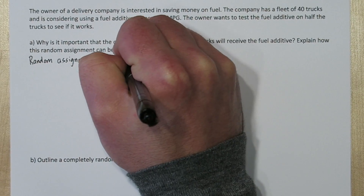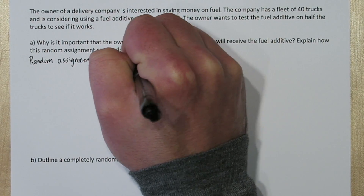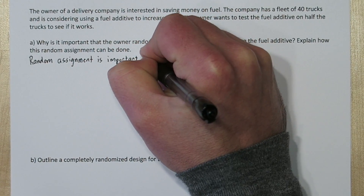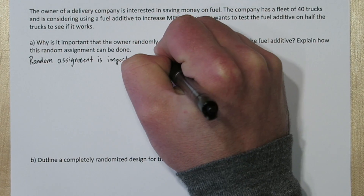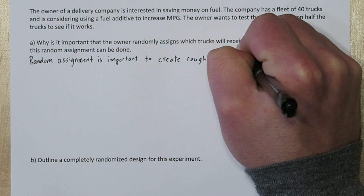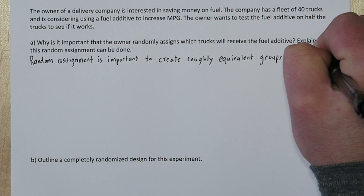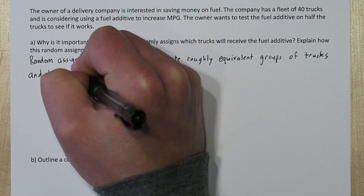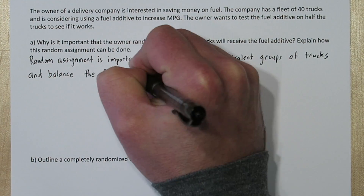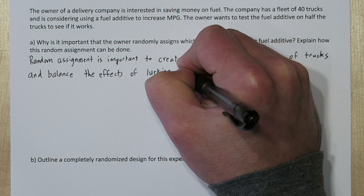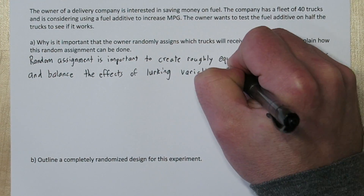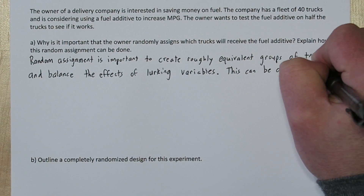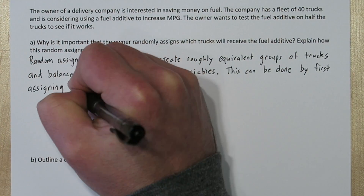Or maybe he'd choose the worst trucks. We don't want to leave it up to the owner — we want to use random assignment. Random assignment is important to create roughly equivalent groups of trucks and balance the effects of lurking variables.